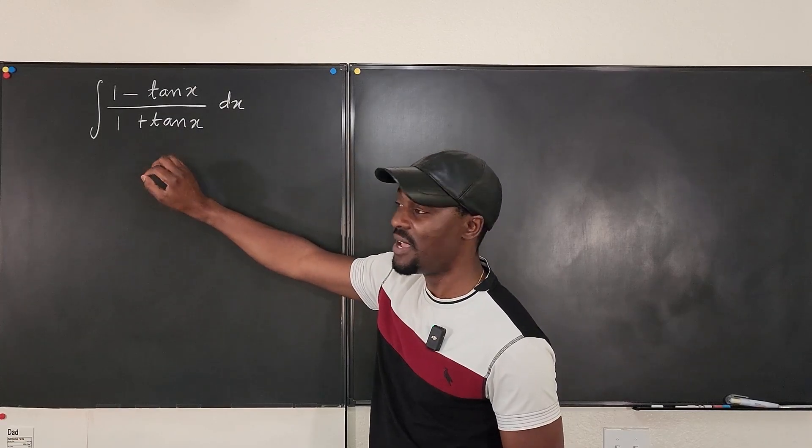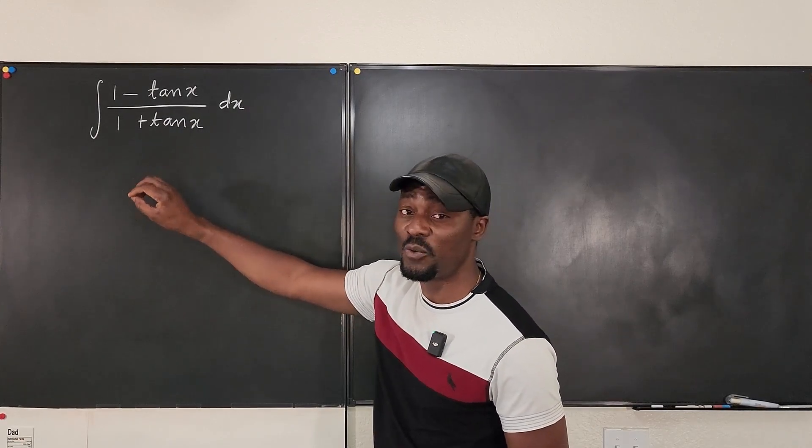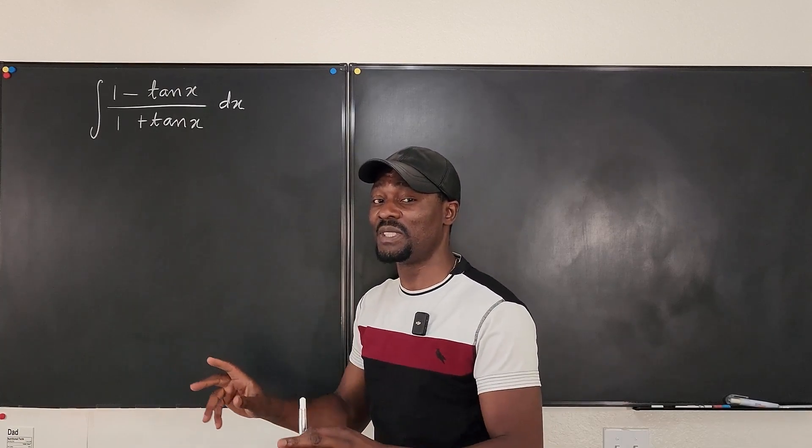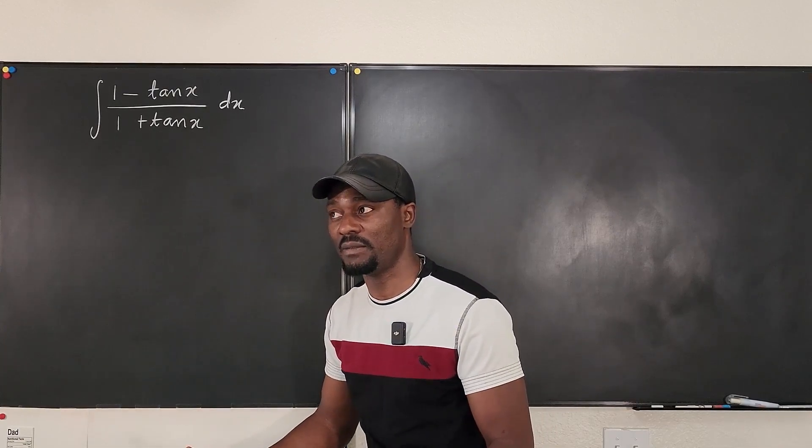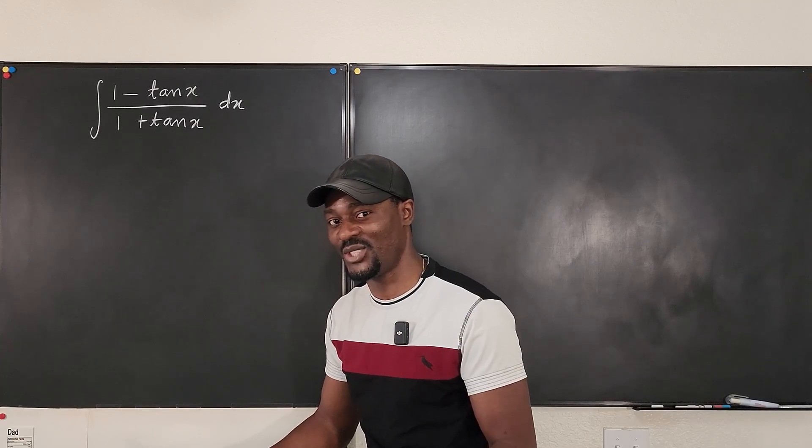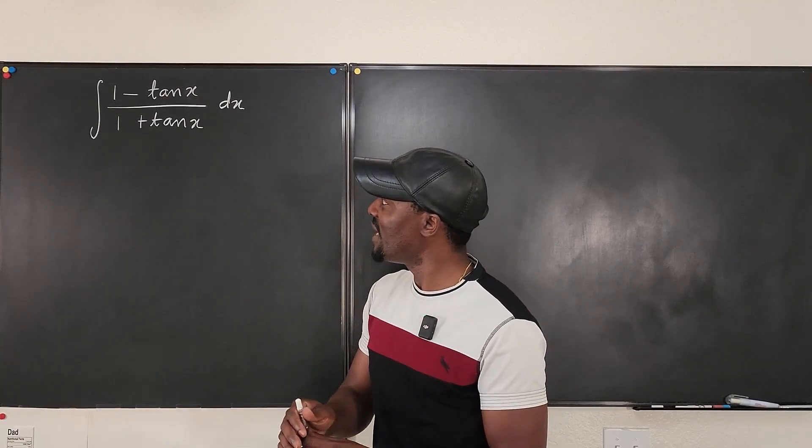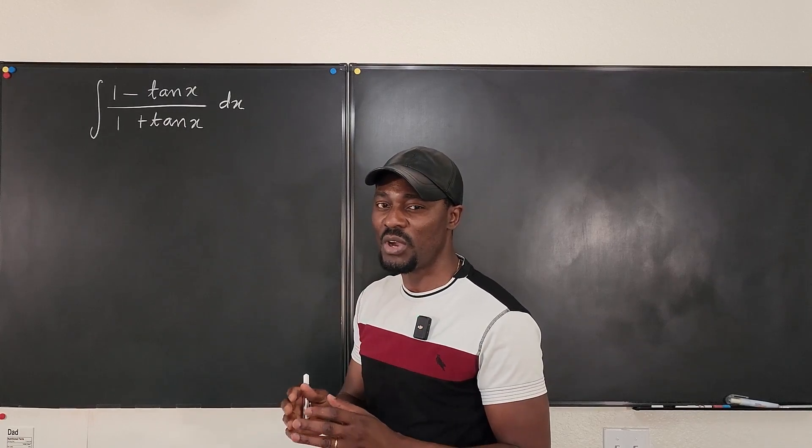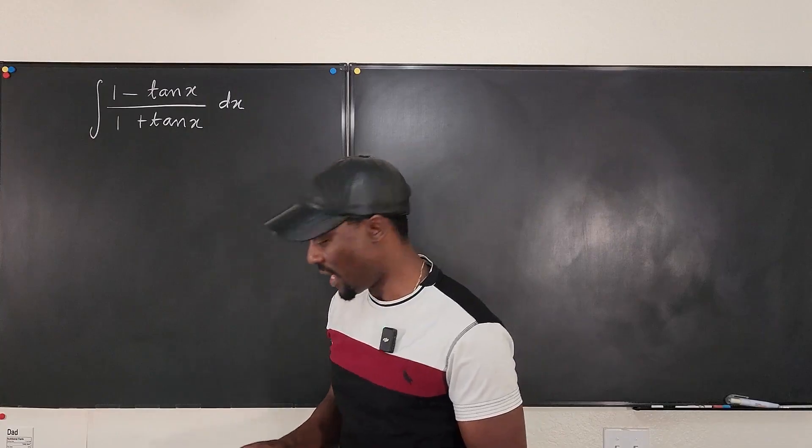I thought of rationalizing this, but I don't think it's going to make things easier. One of them might be able to give me some secant, but at the end of the day, I also do more complicated stuff. Yeah, I think so. So what I would do is rewrite everything in terms of sine over cosine. And let's see what that looks like.